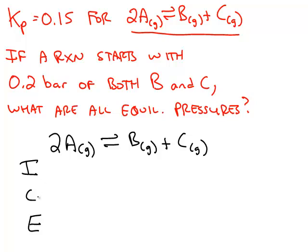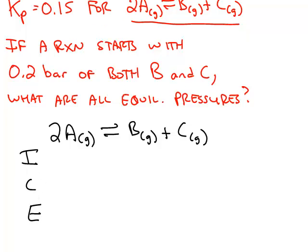I stands for initial, C is change, E is equilibrium. If we're dealing with a Kp, then the units we plug into the ice chart will be bar, or atmosphere.